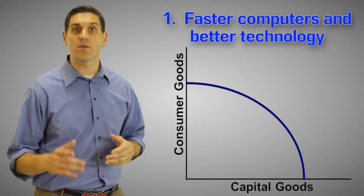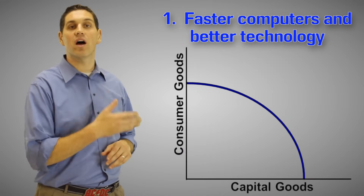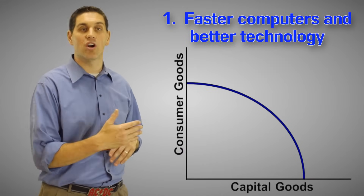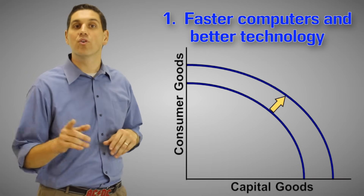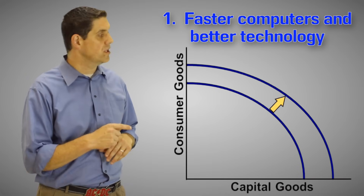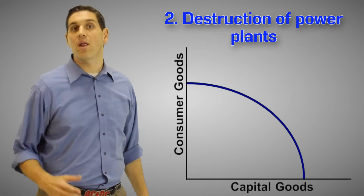For number one, if we have new computers and better technology, the entire production possibilities curve will shift outward. We can produce more consumer goods and more capital goods.